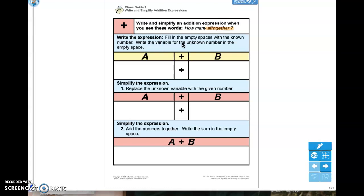So write the expression, fill in the empty spaces with the known number. Right now, we don't know what A is. So we're going to use our marker tool and we're going to just write in the letter A. We also don't know what B is. So right now, it says A plus B.